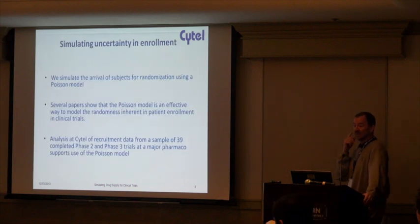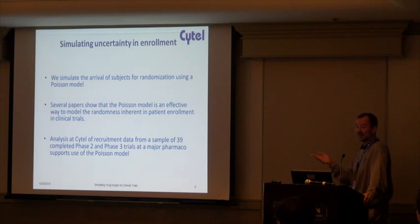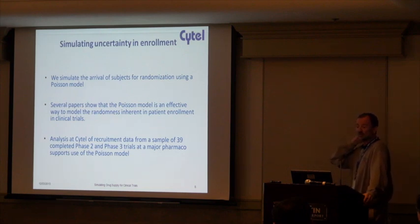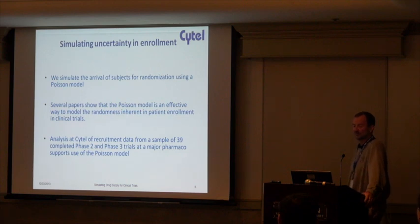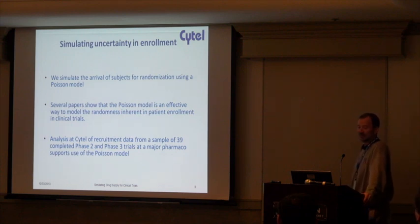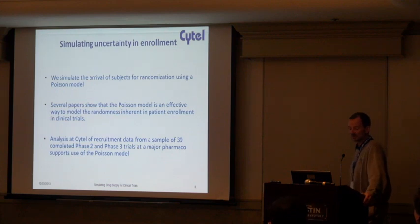Via simulation and accounting for uncertainty, we can predict how things might happen. What we do is simulate the arrival of subjects using a Poisson arrival model. There are papers that mention that the Poisson model is an effective way to model the randomness of patient enrollment, and analysis of recruitment data from a large number of trials has supported the use of that model.